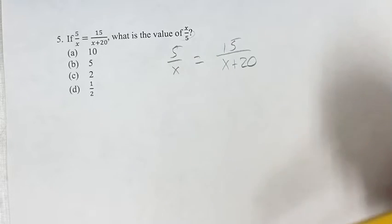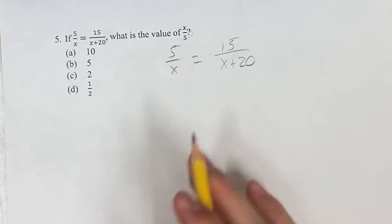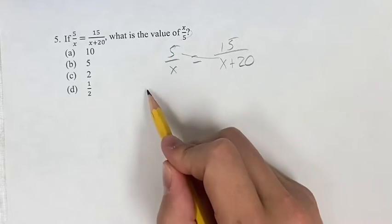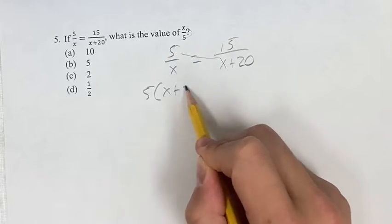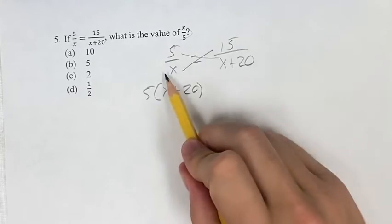When you have two fractions equal to each other and there's nothing that can be cancelled, the easiest thing to do is just to cross multiply. So we have 5 times x plus 20 equals 15 times x.